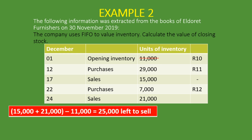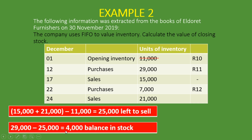We've taken out the 11,000 opening inventory completely, and we still have 25,000 units left to sell. We take those from the earliest available batch, which is the purchases of 29,000 units. So 29,000 minus 25,000 leaves a balance of 4,000 units in stock. We have now sold all the inventory we needed to sell. What we are left with is 4,000 units from the 29,000-unit batch, plus 7,000 units at 12 Rand, which we didn't touch.